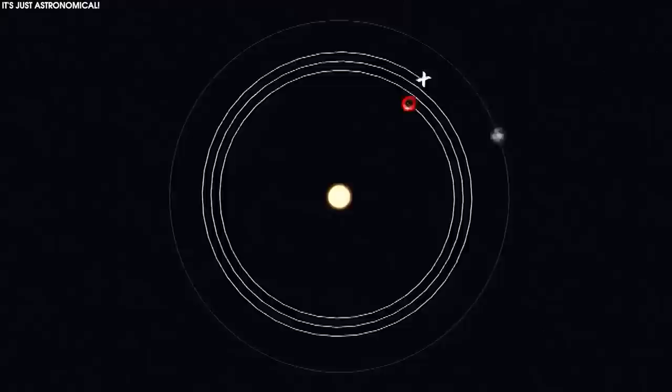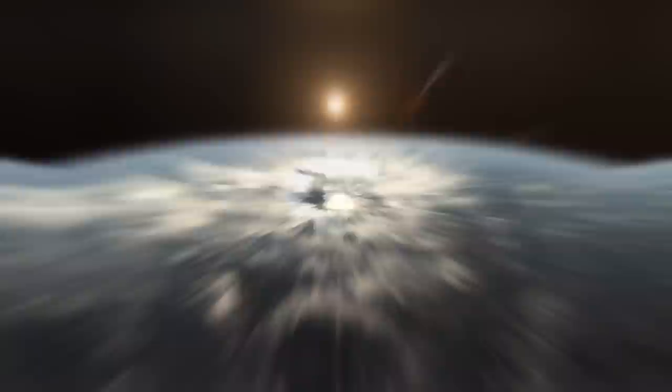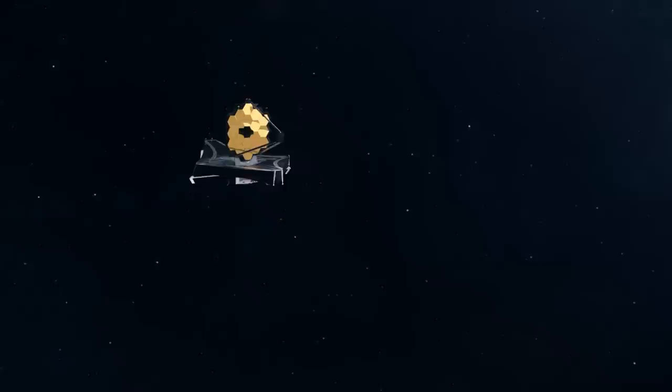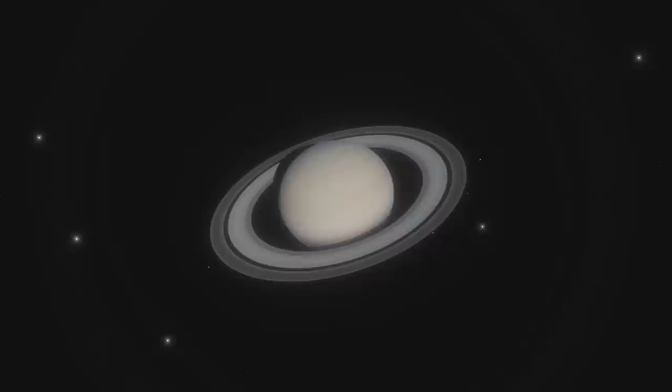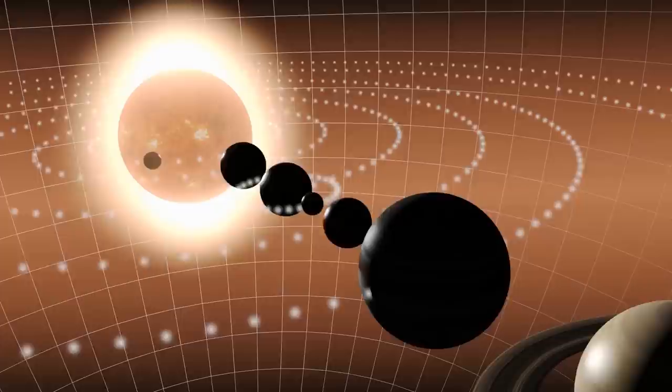From its orbit around the second Lagrange point, a spot roughly one million miles from Earth in the direction opposite the sun, Webb can't observe the planet's interior to its orbit. So with Earth, Venus, and Mercury off-limits for that reason, Saturn represents the last of the telescope's planetary targets.